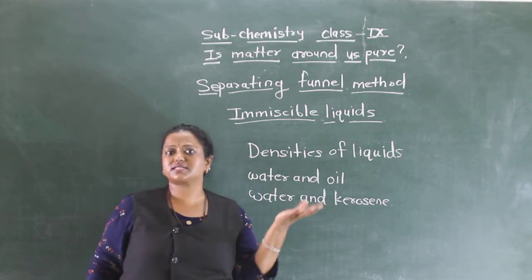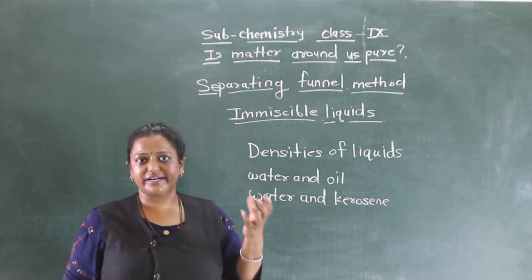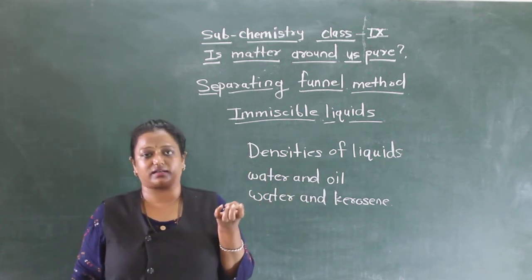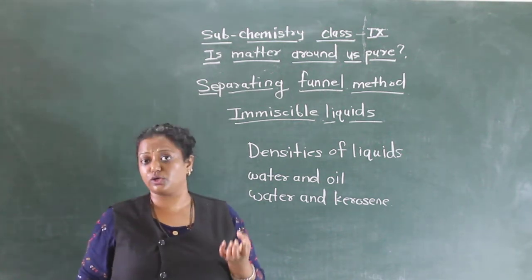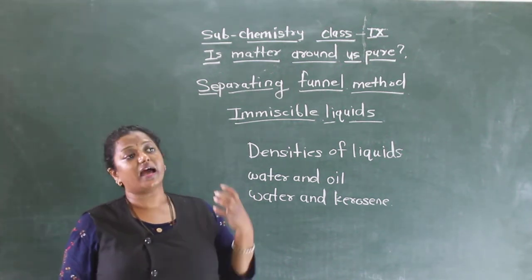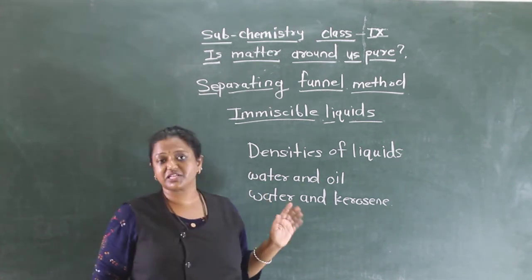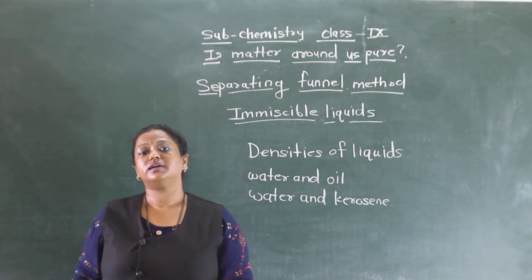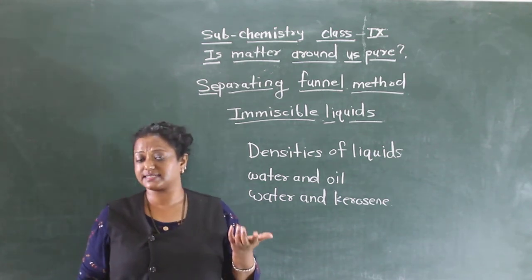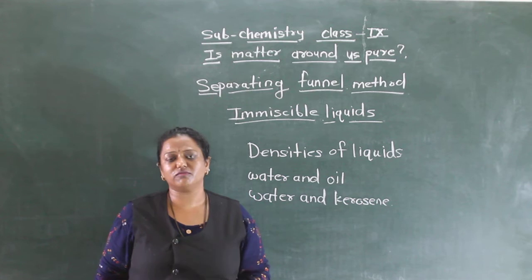Water looks less dense but actually it is more dense. Oil looks thick and we think oil is more dense. But no, water is more dense and so oil floats on it. The liquid which has more density will settle down and the liquid which has less density will be floating on the water.